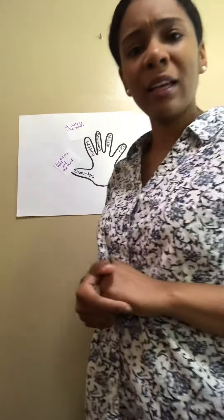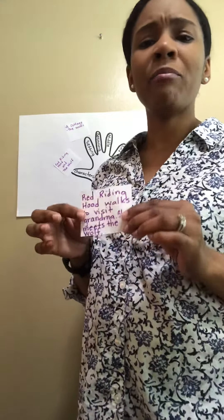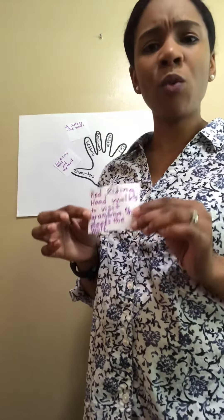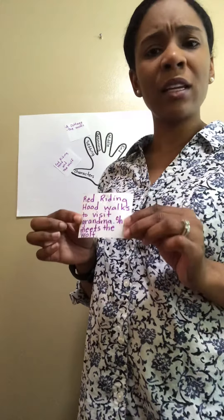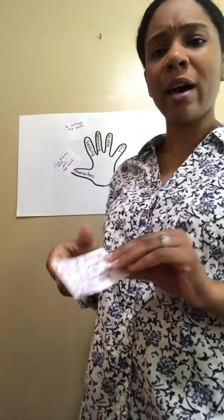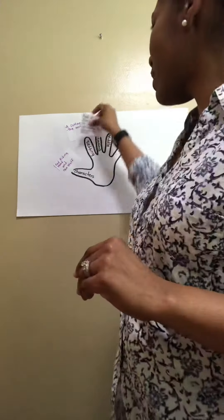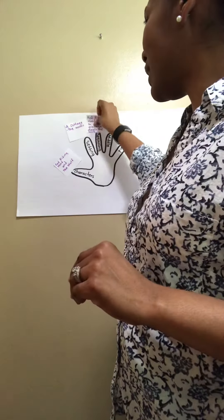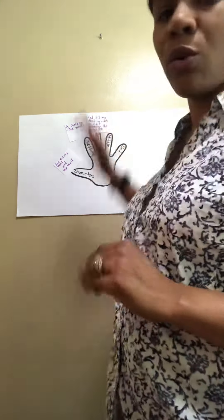Now let's think about the beginning. In the beginning of the story was where Red Riding Hood met up with that wolf at the very beginning of the story on her way to Grandma's house. We're going to make that the beginning of our story.